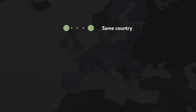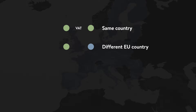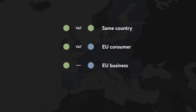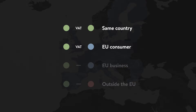When selling to customers in the same country as your store is located, you are required to charge them VAT. If you are selling to a different country within the European Union, you have to distinguish between consumers and businesses — you should charge VAT to consumers, however you do not charge VAT to your business customers. If your customer resides outside the EU, you do not charge them VAT at all. So out of these four scenarios, you charge VAT to your customers only in the first two cases.